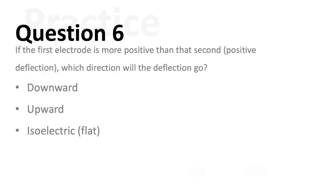Question six. If the first electrode is more positive relatively than the second one, so a positive deflection, which direction will the deflection go? Downward, upward, or isoelectric meaning flat? If you answered downward, you would be correct.